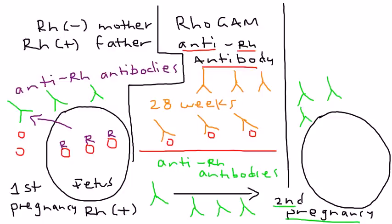If you have a second pregnancy, similar scenario, you have a fetus with these Rh positive red blood cells. What can happen is these anti-Rh antibodies can cross over via the placenta and attack the fetal red blood cells.